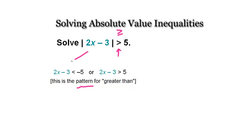You want to split it up like this: take 2x minus 3 and make it less than negative 5 — originally it was 5, so you make it negative 5. And then it's OR: write it also as 2x minus 3 greater than positive 5. So you rewrite whatever's inside the absolute value symbol twice — once with the minus sign and once with the plus sign — and separate them with the word OR.